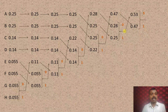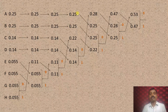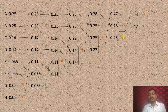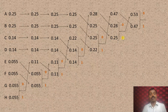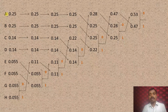Next we calculate the code word by tracing backwards. For A with probability 0.25, tracing backwards through the tree, 1 is assigned at one node — this 1 will be the LSB in the code word for A. Continuing to trace back, 0 is assigned at the next node. Therefore, 01 is the code word for A.